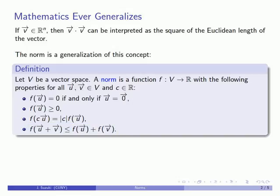Just a quick note: we can actually generalize this concept even further if we substitute any scalar field for the real numbers. The concept of a norm is the generalization of the concept of Euclidean distance, so let's see how that plays out.